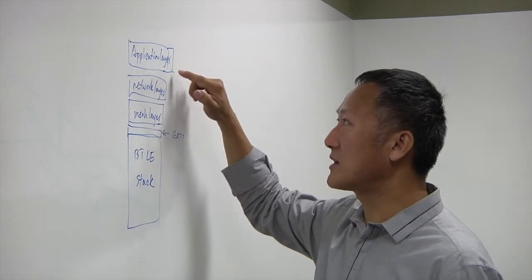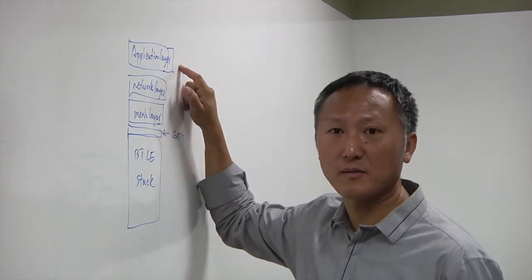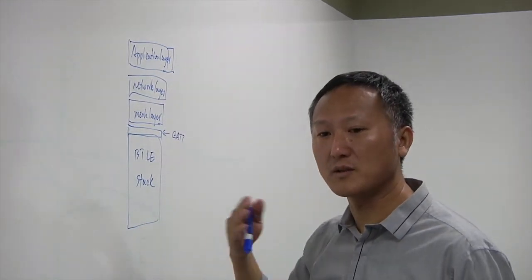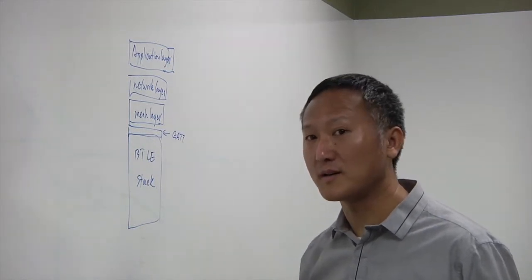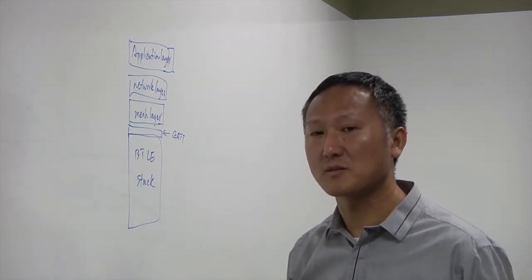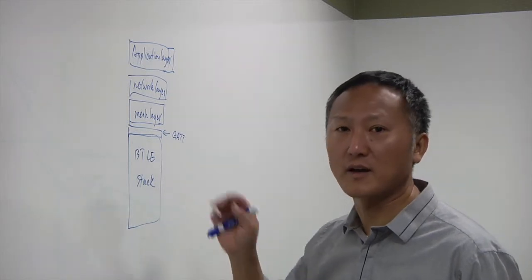And on top of the network layer will be the application layer. The application layer will determine whether this device is a light bulb or it's a door opener or it's a smartphone. So it's a layered architecture.